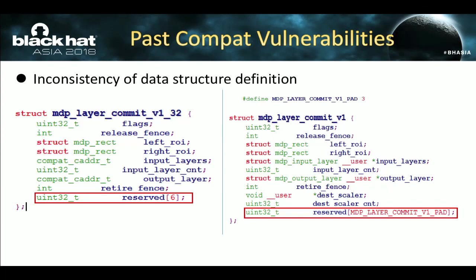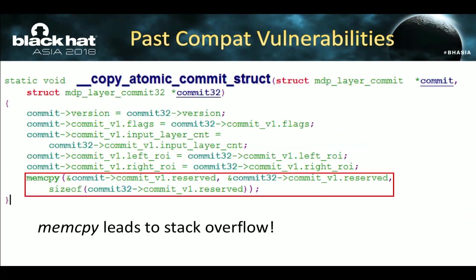This is an example of inconsistency of data structure definition. The left structure, MDP_LAYER_COMMIT_V1_32, is the 32-bit user space data structure, while the right, MDP_COMMIT_V1, is the corresponding 64-bit kernel space structure. The two structures have almost the same definition, making it seem easy to convert. However, the reserved array field in these two structures has a different size — the developer made a mistake. The one on the left is larger than the one on the right. So when the kernel uses memcopy to copy data from the larger structure to the smaller one, there is a stack overflow.